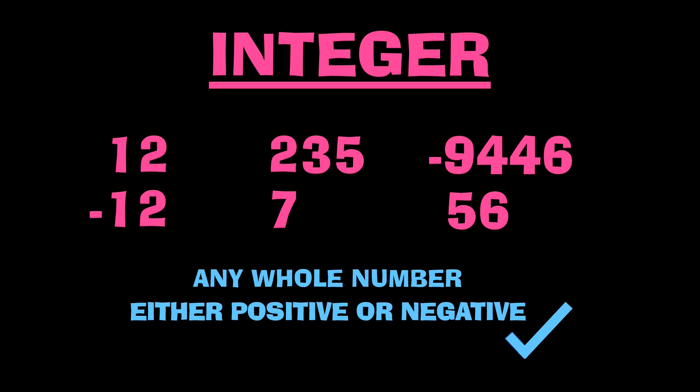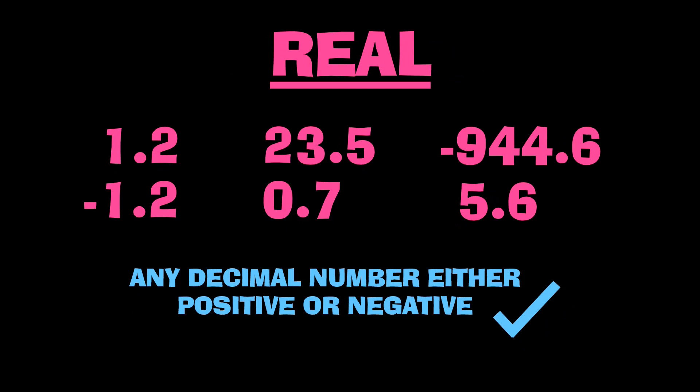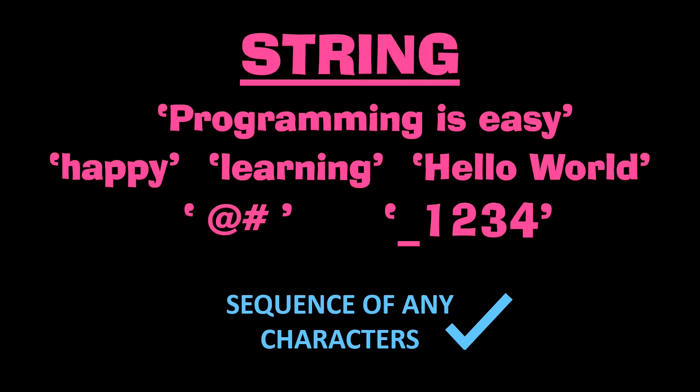Before moving forward, let's look at each of these data types. Integers contain whole numbers, either positive or negative — you can see examples on screen. Real data type contains decimal numbers, either positive or negative — you can see examples on screen.